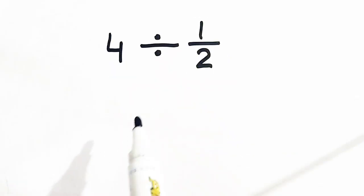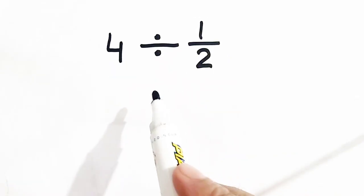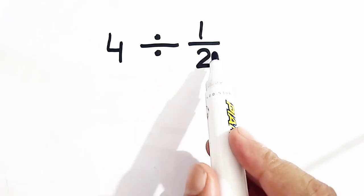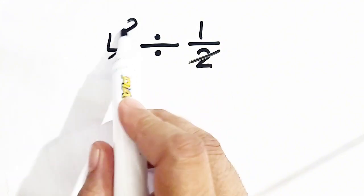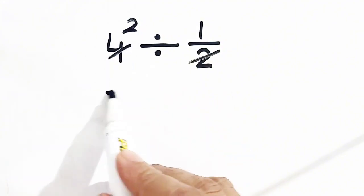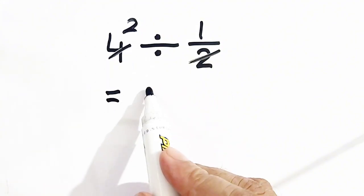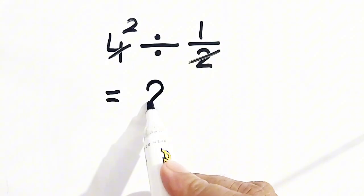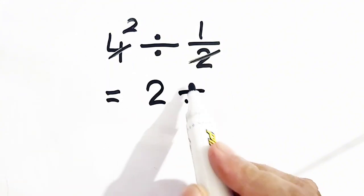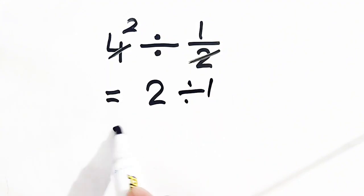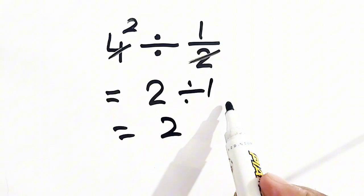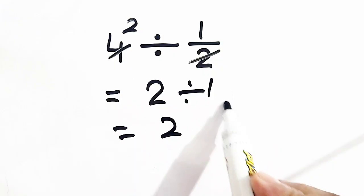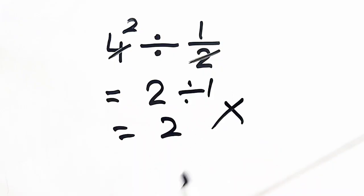Mostly people are in a hurry and they cancel 2 and 4, so their answer is 2 divided by 1, which equals 2. But that is their mistake.